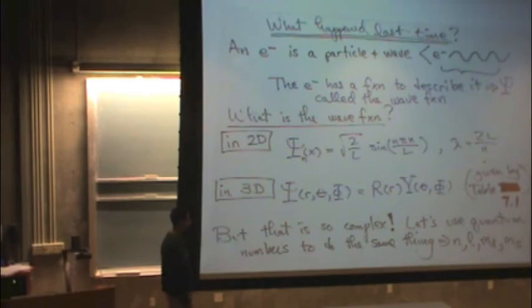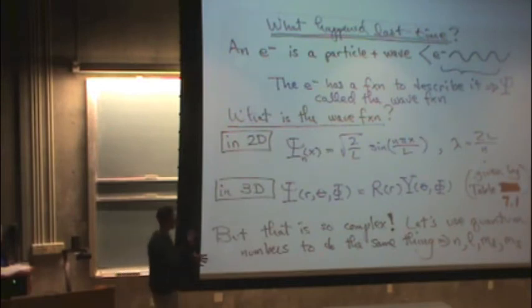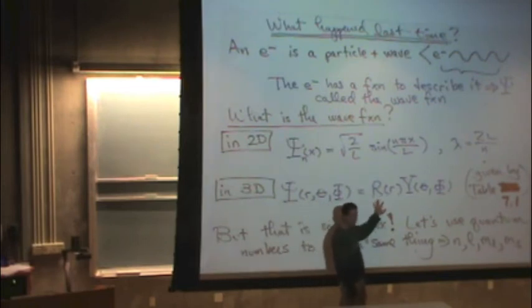3D wave function. I told you last time there's three variables in the spherical polar coordinate system: r, theta, and phi. r is a distance from the origin, and theta and phi are two angles in three-dimensional space. And that can factor out into a radial part of the wave function and an angular part of the wave function.